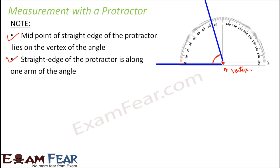Once you have placed the protractor correctly, start reading from zero degrees. Make sure the zero mark coincides with the arm along the straight edge. Then see where the other arm of the angle falls. In this example, the other arm falls exactly between 70 and 80 — that is, at 75. So the measurement of this angle is 75 degrees.